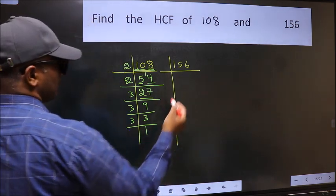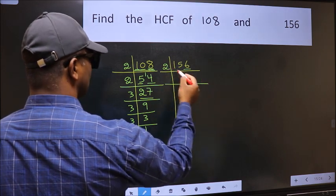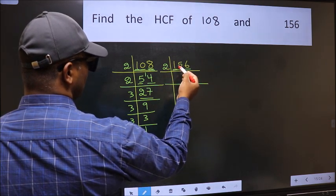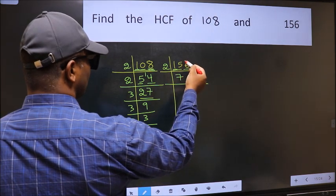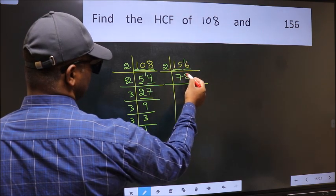The other number. Last digit 6 is even, so take 2. First number 1 is smaller than 2, so 2 into 15. A number close to 15 in 2 table is 2 times 7 is 14. 15 minus 14 is 1, 1 carried forward makes 16. When do we get 16 in 2 table? 2 times 8 is 16.